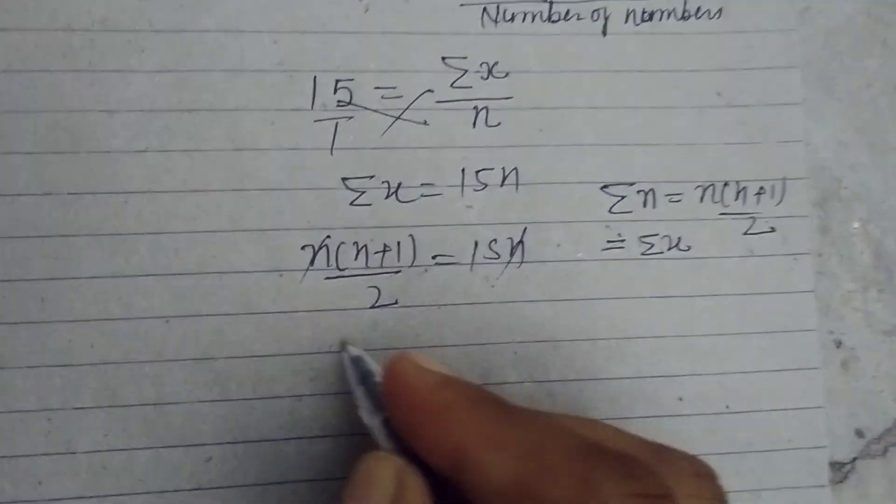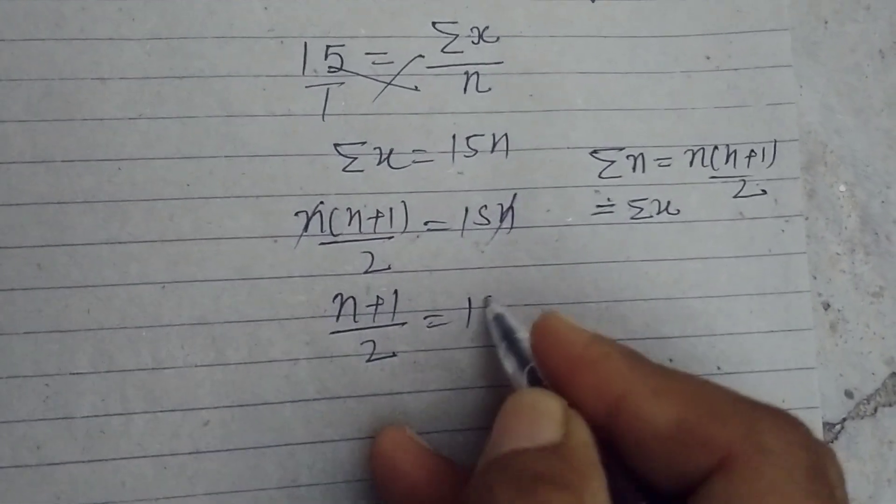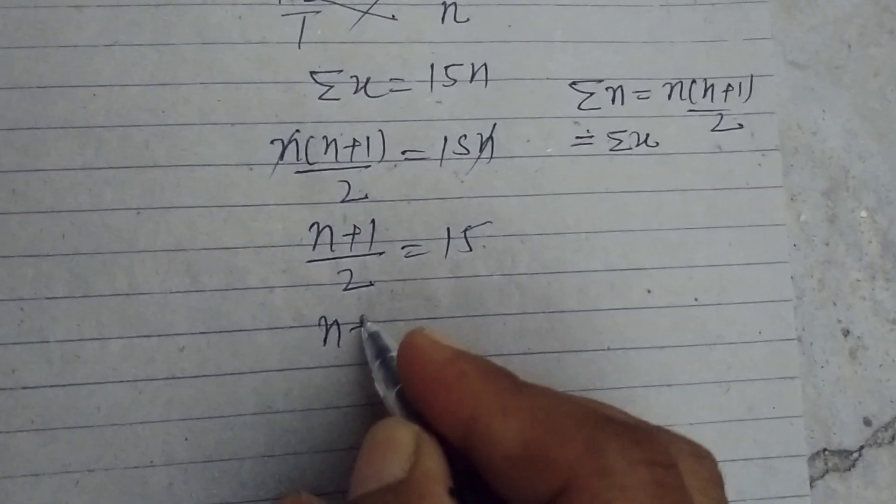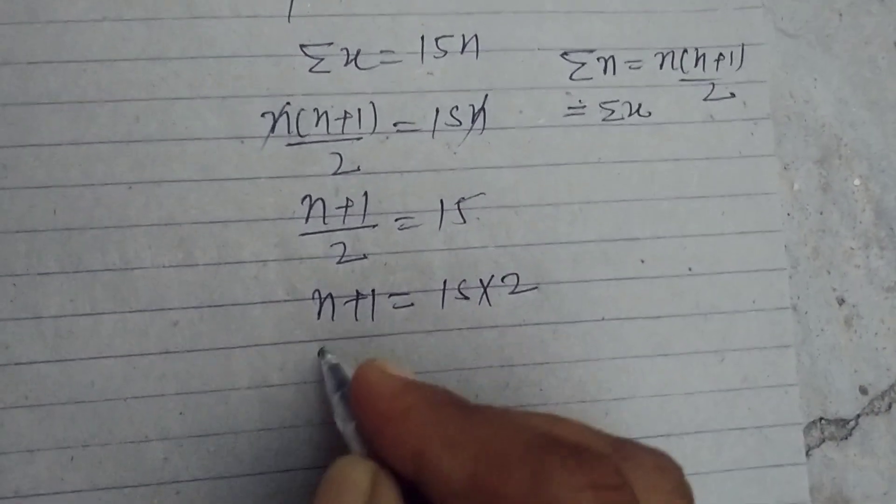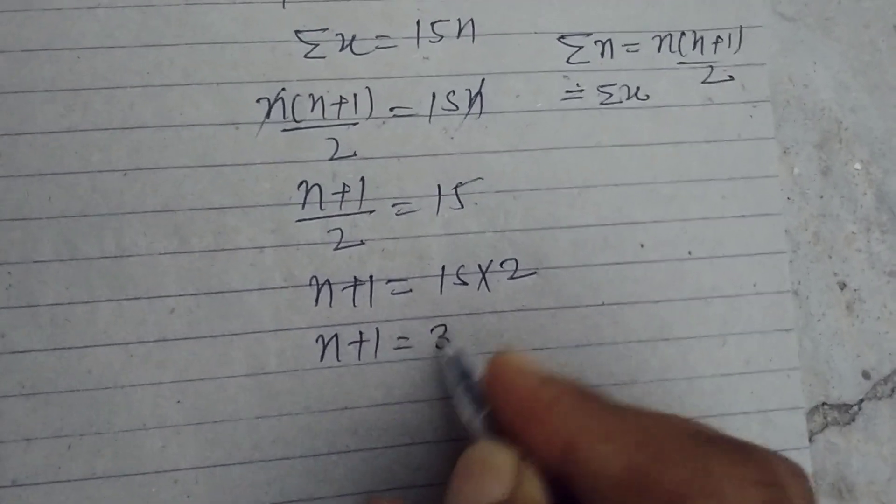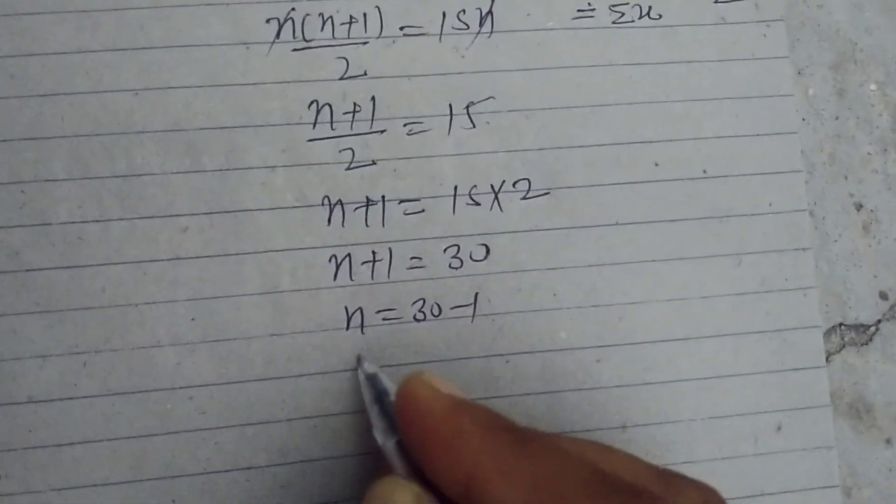Canceling n, we get (n+1) divided by 2 equals 15. On cross multiplication, we get n+1 equals 15 times 2. n+1 equals 30, and n equals 30 minus 1.